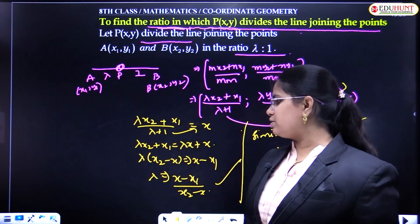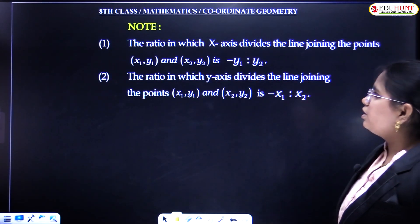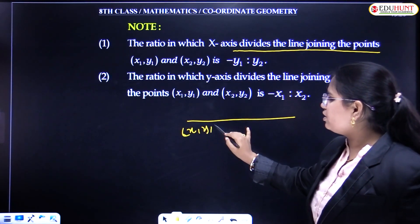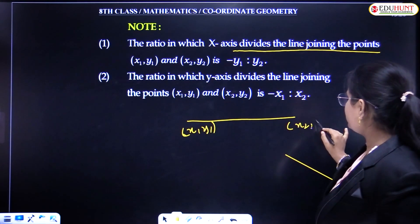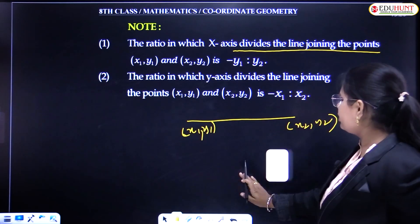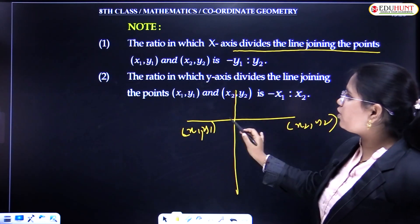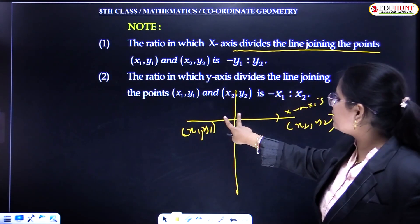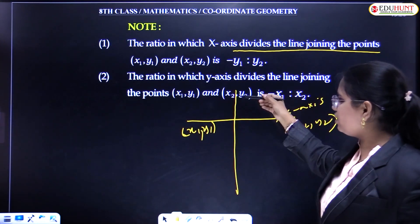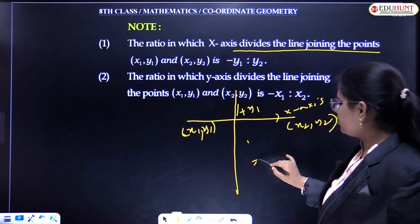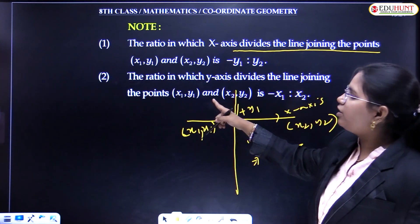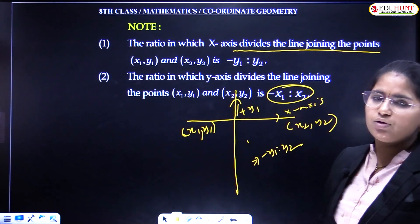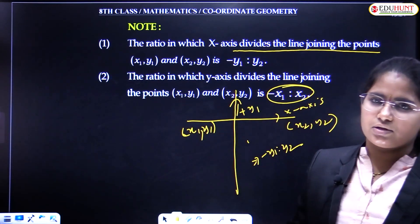Note point: the ratio in which the x-axis divides the line joining the points (x1, y1) and (x2, y2) is always −y1 to y2. Similarly, if the y-axis divides the line segment, the ratio will be −x1 to x2. These are important note points derived from the above section formula derivation.